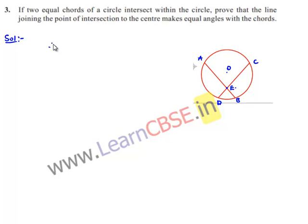Therefore here, given that AB and CD are two equal chords, we can write that AB is equal to CD.